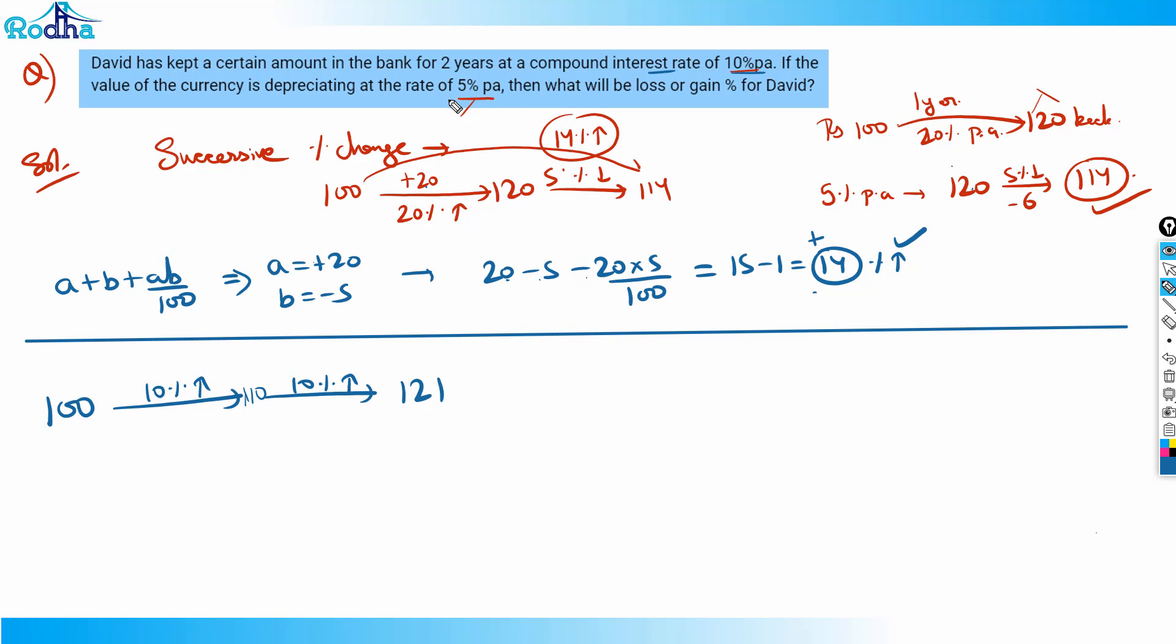There's a depreciation of 5% per annum, so two times 5% decrease. I've taught in my percentage videos that if you change the order it doesn't impact. If you first increase 20 and then decrease 5, you get 14. If you first decrease 5 it becomes 95, then increase 20%, that's plus 19, becomes 114. The answer is the same. By this arrow method, the percentage value doesn't change.